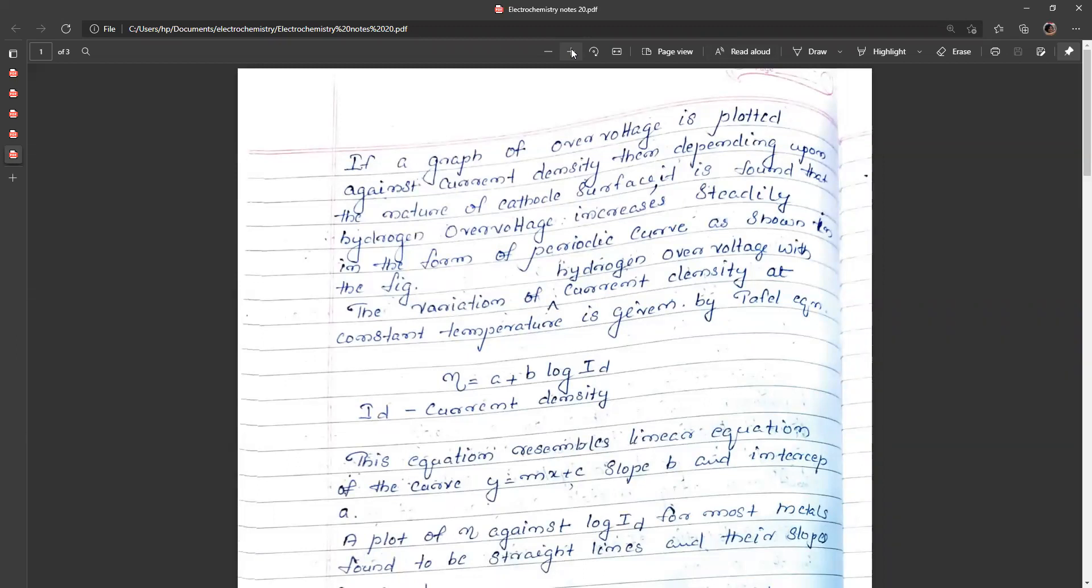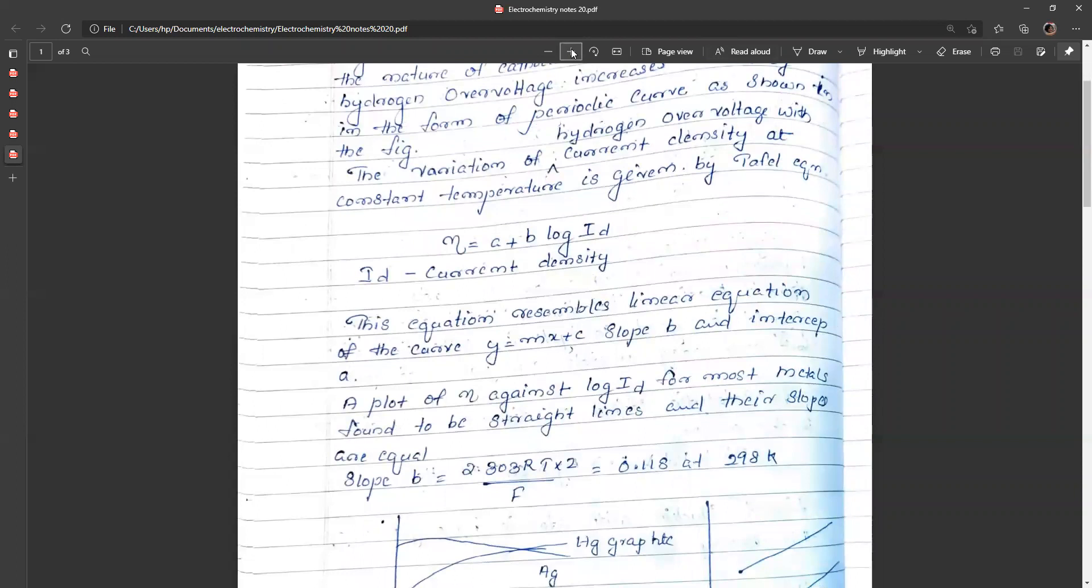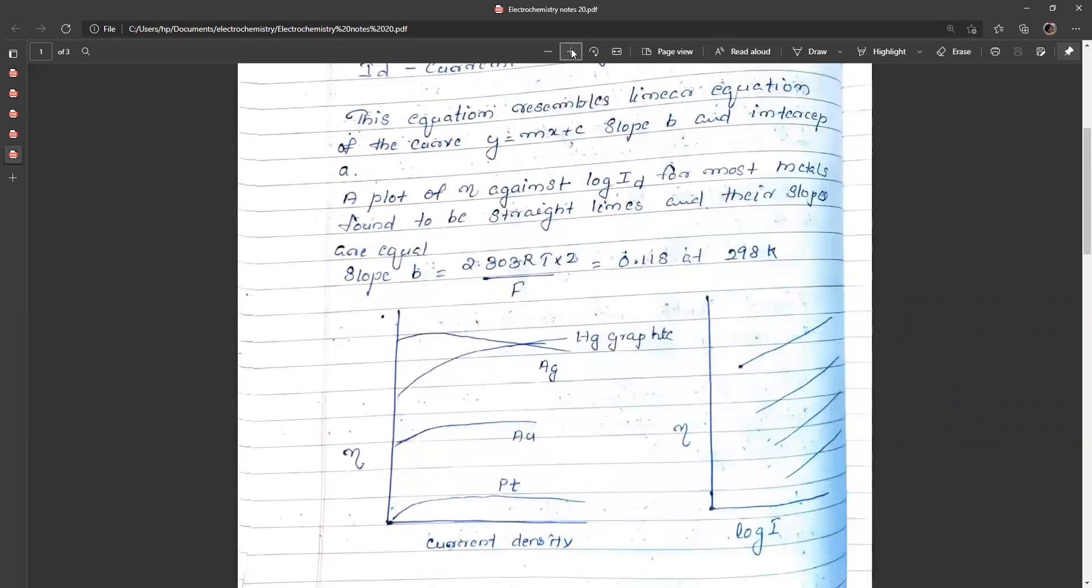The variation of current density with hydrogen overvoltage at constant temperature is given by the Tafel equation: eta equals a plus b log id, where id is the current density and a and b are constants. This equation is a linear equation with the slope y equals mx plus c.